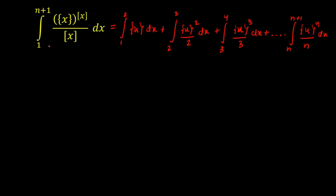We have computed the integration as a sum: from 1 to 2 of {x} dx, plus from 2 to 3 of {x}^2/2 dx, and so on up to from n to n+1 of {x}^n/n dx. Now I will explain a beautiful concept using an example: the integration from 0 to 2π of |sin x| dx. Since |sin x| = 0 at 0, π, and 2π, I break the limit at π, giving two parts: 0 to π and π to 2π.